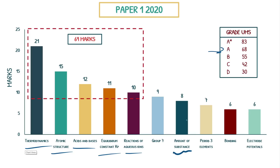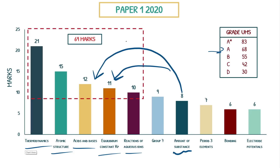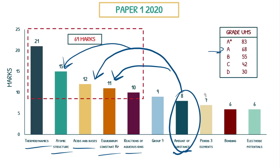Amount of substance is another fundamental one. It can apply knowledge to acids and bases, to Kp, and to atomic structure. If there are calculations involved, this is going to be fundamental. Amount of substance is key for most topics, especially across physical chemistry. The A star boundary was 83 marks even lower than paper one 2019.